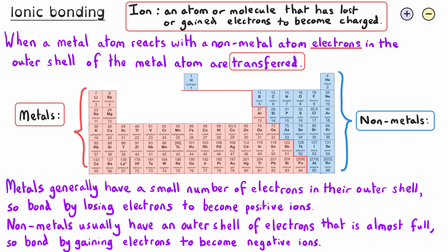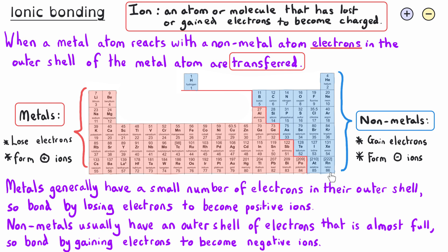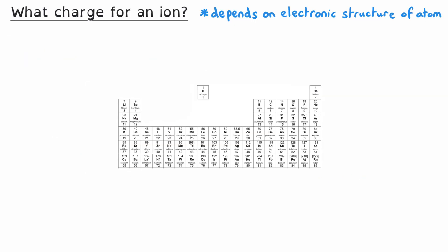You can predict what type of ion an element will form based on its position in the periodic table. The metals, shown here in red, will typically lose their electrons and become positive ions. Non-metals, shown here in blue, will gain electrons and become negative ions. Ions aren't simply positively or negatively charged — some can be more positive or more negative than others. The sign and size of the charge depends on the electronic structure of the atom the ion is formed from.